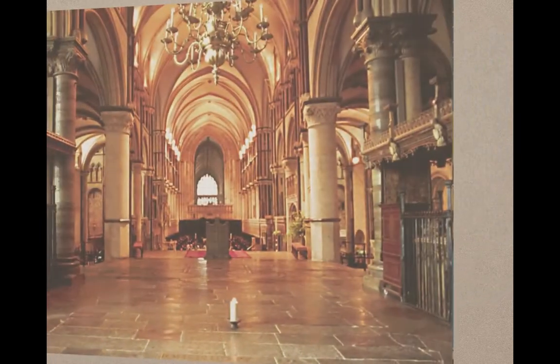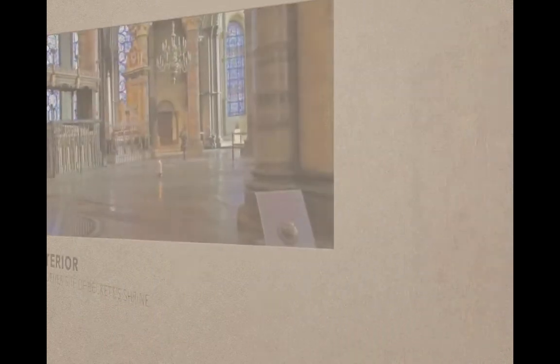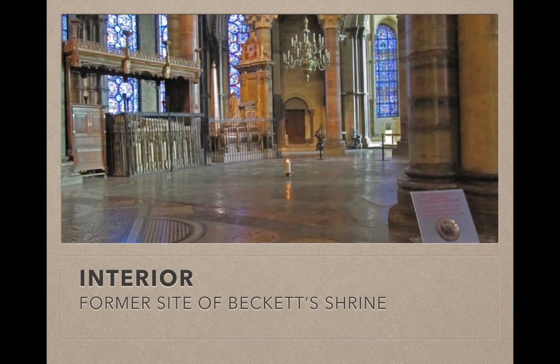Here is a photo from the altar looking down the nave, and the candle marks where the tomb of St. Thomas of Becket — who's very important to us — used to be, though we don't have it now. This is the same view looking from the nave of the church towards the altar. You can see a candle burning there. Thomas of Becket's shrine was right there, right in the front of the church near the altar.